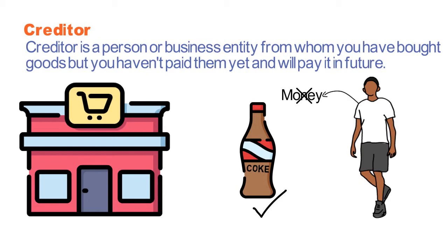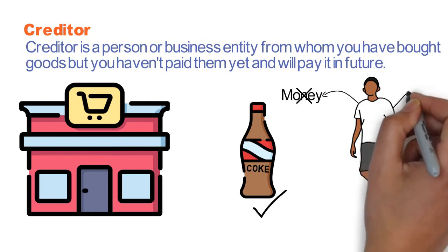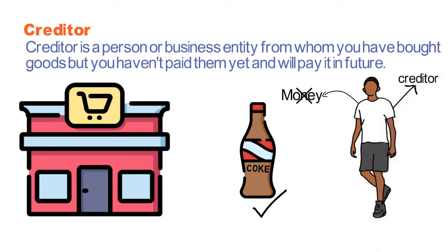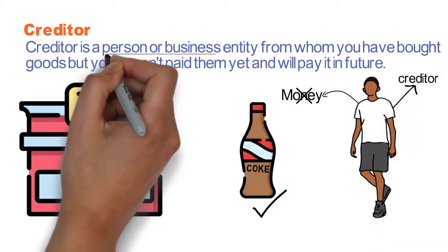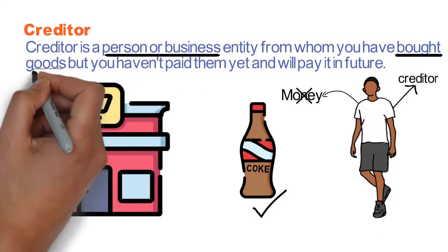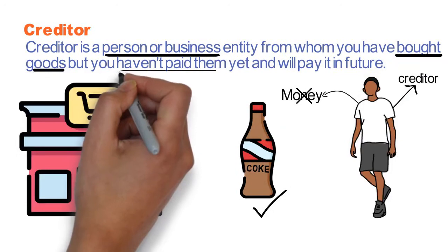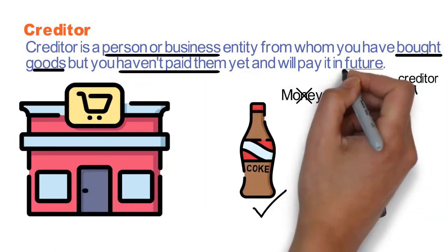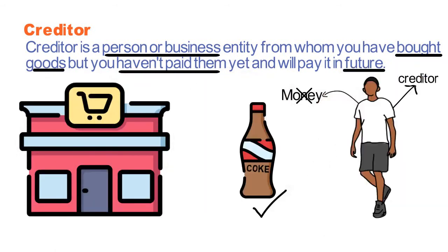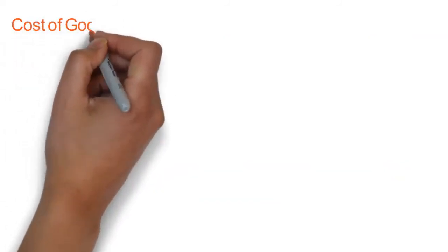When this shopkeeper records this transaction in his books of accounts, he'll record you as a creditor. A creditor is a person from whom you have bought goods but you haven't paid them money — you will pay it in future.